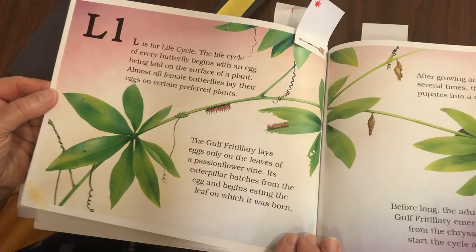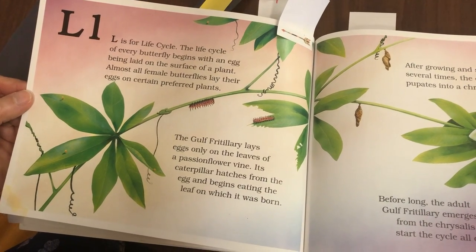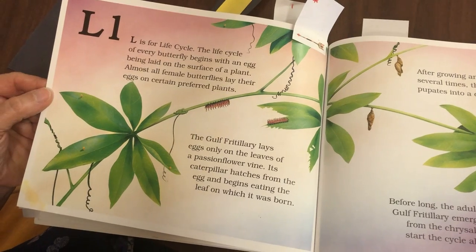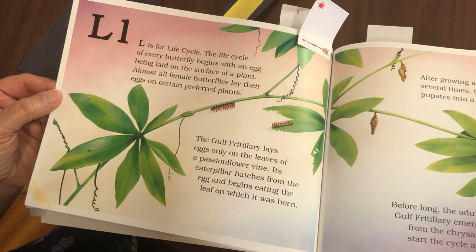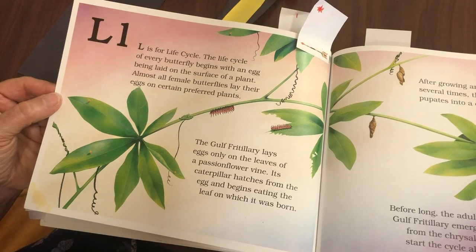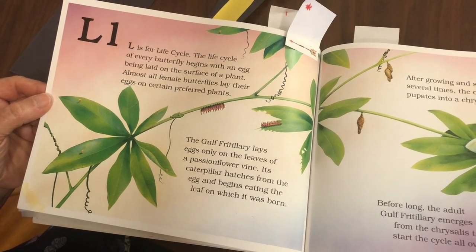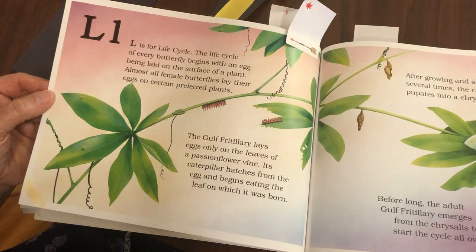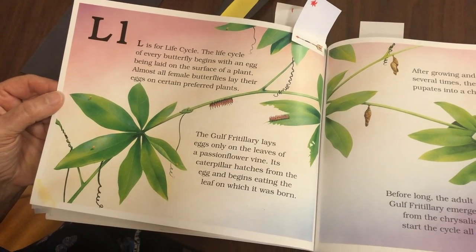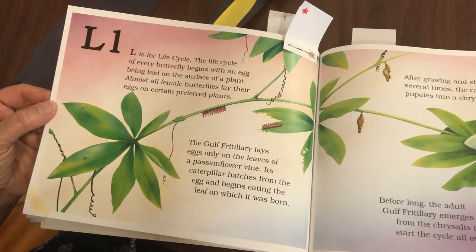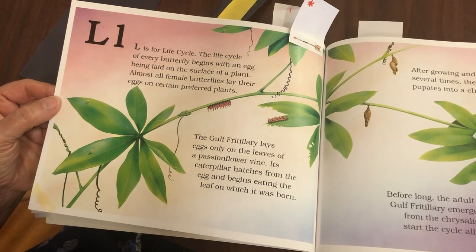L is for life cycle. The life cycle of every butterfly begins with an egg. The egg is laid on the surface of a plant. Almost all female butterflies lay their eggs on certain preferred plants. The gulf fritillary lays eggs only on the leaves of a passionflower vine.